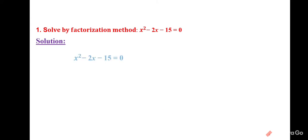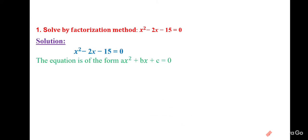Now we will study the factorization method first. Any equation given in the form ax² + bx + c = 0 can be solved by the factorization method. The given equation x² − 2x − 15 = 0 is in the form ax² + bx + c = 0, where a = 1, b = −2, and c = −15.